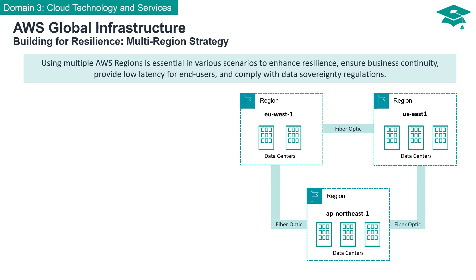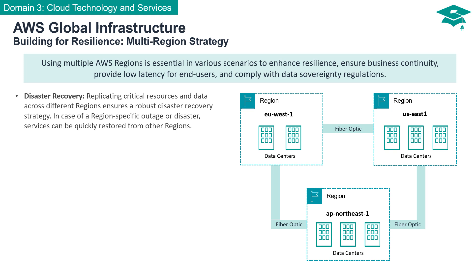In the ever-evolving landscape of cloud technology, building resilient systems is imperative. The adoption of a multi-region strategy within AWS is a key component to enhance resilience, ensure business continuity, provide low-latency experiences for end-users, and remain compliant with data sovereignty regulations. To bolster your disaster recovery strategy, you can replicate critical resources and data across different regions. In the event of a region-specific outage, your services can be swiftly restored from other regions — this redundancy is your safety net.